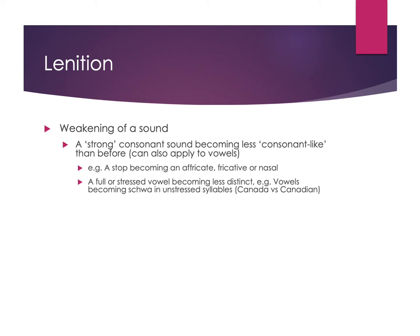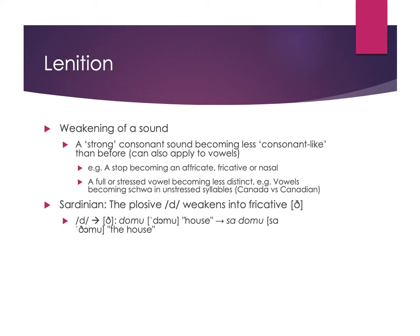This is very frequent in many languages. A lot of Romance languages have a pattern where plosives, such as a D sound, weaken into a fricative — often when positioned between vowels. For example, the word 'domu' (house): instead of 'sa domu' you get 'sa ðomu', with a fricative sound instead. Between vowels it's hard to completely close your vocal tract, pause, and release; it's much easier to keep air flowing consistently, so rather than a full plosive, it weakens into a fricative.